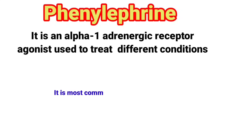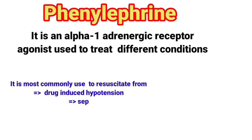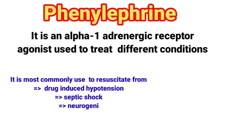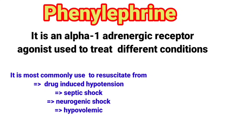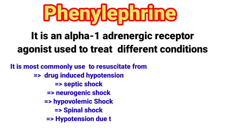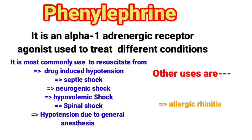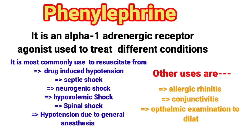It is most commonly used to resuscitate from drug-induced hypotension, septic shock, neurogenic shock, and hypovolemic shock. It is the choice of drug to treat spinal shock. Also used to treat hypotension due to general anesthesia. Other uses include allergic rhinitis, conjunctivitis, and ophthalmic examination to dilate pupils.